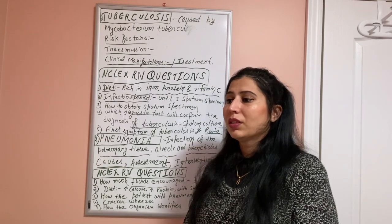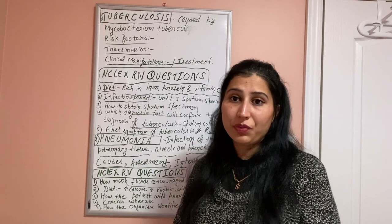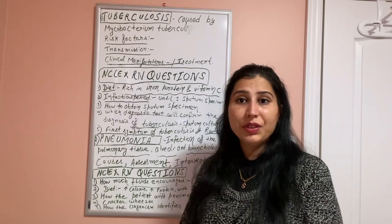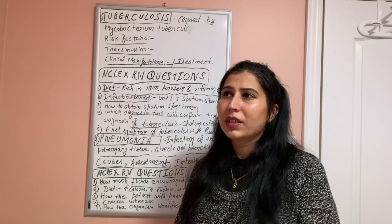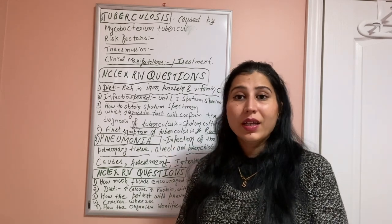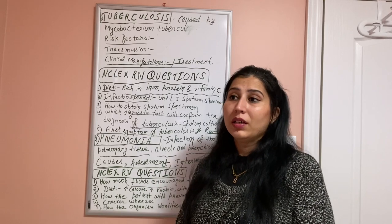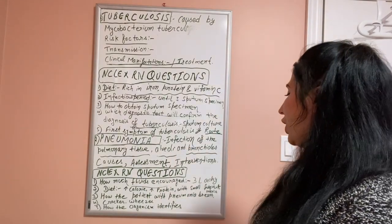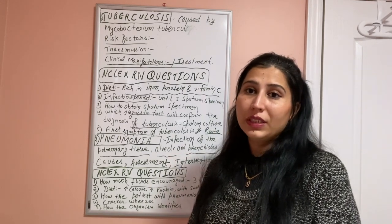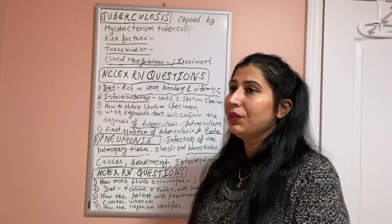Interventions for pneumonia: because the person has breathing difficulty, we give oxygen. We give chest physiotherapy to drain secretions. We encourage three liters of water per day so secretions can thin and be excreted. If the patient has fever, we give antipyretics. During inspiration the patient feels pain, so we give antibiotics for congestion, bronchodilators, and nebulizers.